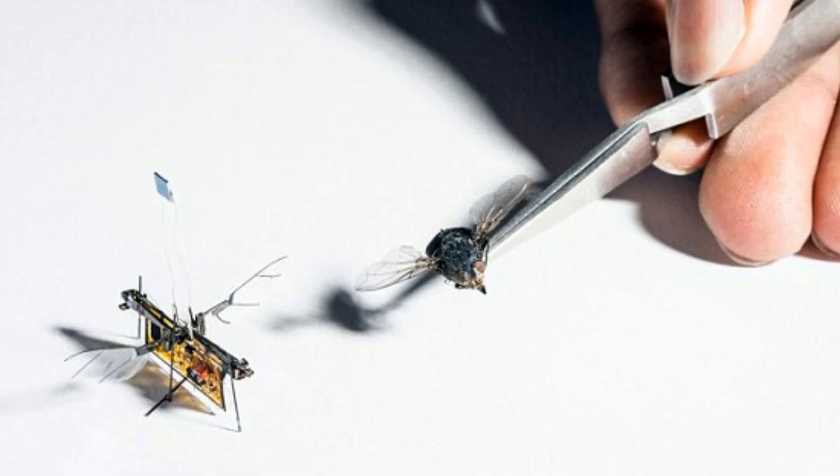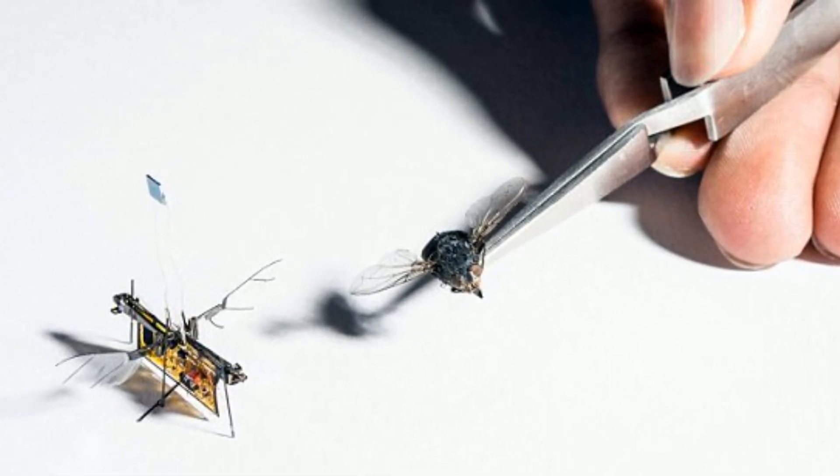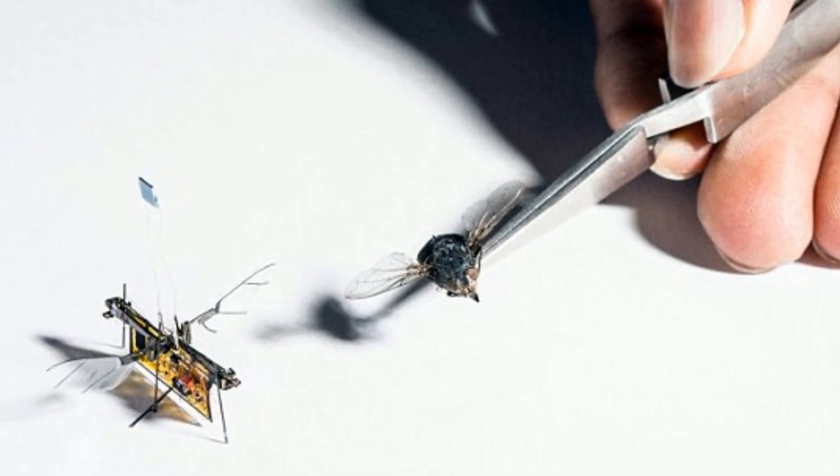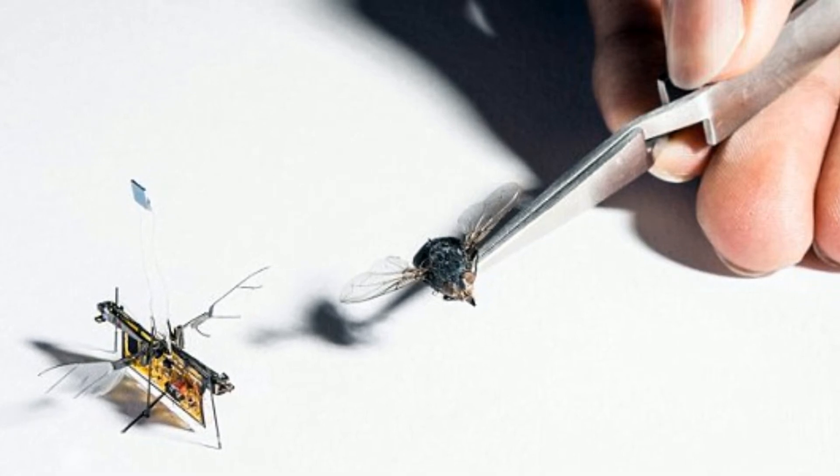Insect-sized flying robots could be used for time-consuming tasks like surveying crop growth on large farms or sniffing out gas leaks. 'I'd really like to make one that finds methane leaks,' he said.